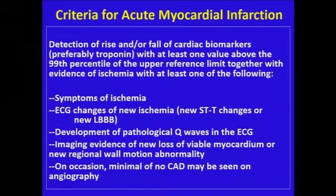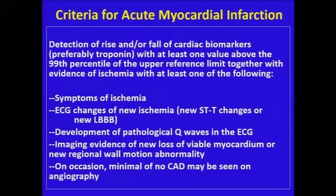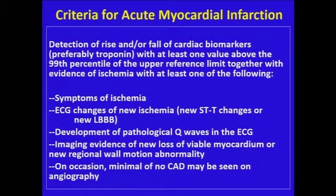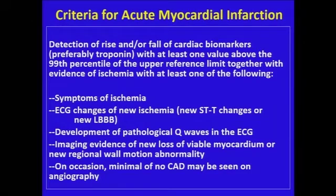This is the criteria for acute myocardial infarction, which has not changed much. This is from the 2012 document. The most important point is a rise and/or fall — a delta — in preferably troponin, but it has to be combined with one of the following: symptoms of ischemia, electrocardiographic changes suggesting ischemia or a new left bundle, development of pathological Q waves in the ECG, imaging evidence of new loss of viable myocardium or a new regional wall motion abnormality, and on occasion, minimal or no CAD may be seen on angiography.